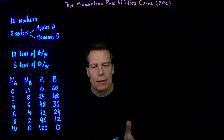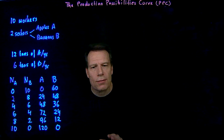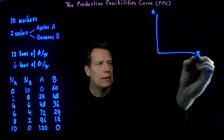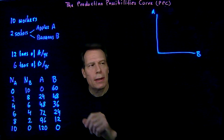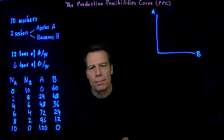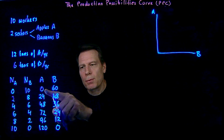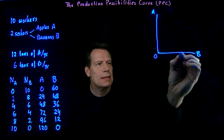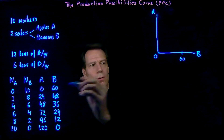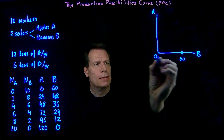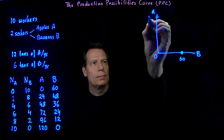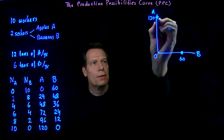So we now have a simple table that illustrates some of the production possibilities in this simple economy. We can then take the numbers in that table and transfer them to a graph. In this graph, we're going to put apples on the vertical axis and bananas on the horizontal axis. Looking at the first row, we'd be producing 0 apples and 60 bananas — that point sits on the horizontal axis at 60 bananas. The last row would have 120 apples but 0 bananas, so it would be this point here at 120 on the vertical axis.